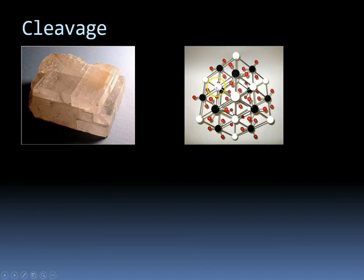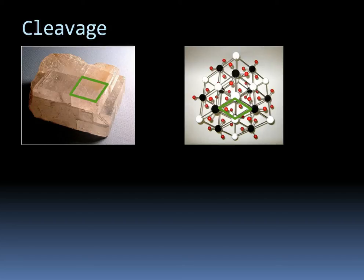This is actually what the structure of calcite looks like — calcite CaCO3. In the picture, the white is the calcium, the black is carbon, and the three little red ones are oxygen. If we look at the mineral on the left, you can see that rhombus shape to the crystal. In the model, you can see that exact same rhombus shape. It's going to break along these rhombohedral shapes because that's how the atoms are bonded together. We talked about mineral bonds in a previous video, and this is when those come back into play.